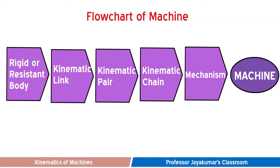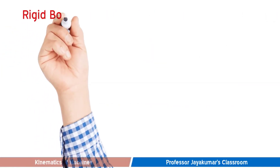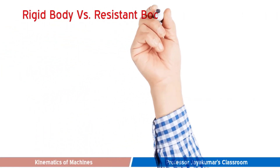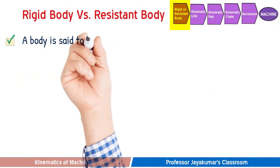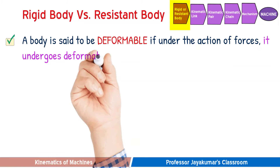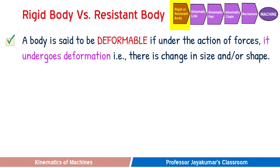A machine transmits and modifies both motion and forces. In this video we will discuss kinematic links. A kinematic link must be a resistant body. First, let us understand the difference between deformable, rigid, and resistant bodies. If a body subjected to external forces undergoes deformation — a change in size and shape — we call it a deformable body. The study of deformable bodies is covered under strength of materials.